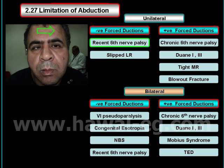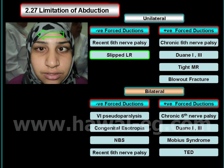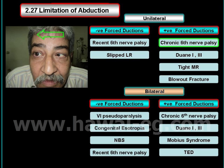About the paralytic causes: they are acute sixth nerve palsy and slipped lateral rectus muscle.